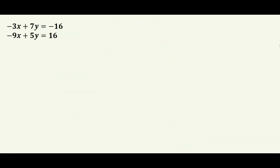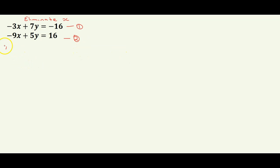Let's try one more. We have −3x + 7y = −16 (equation 1) and −9x + 5y = 16 (equation 2). This time we'll eliminate x. The least common multiple of 3 and 9 is 9. Multiply equation 1 by −3 to get 9x − 21y = 48. Since equation 2 already has −9x, we multiply it by 1 and leave it unchanged.